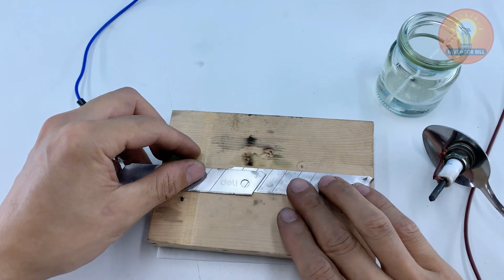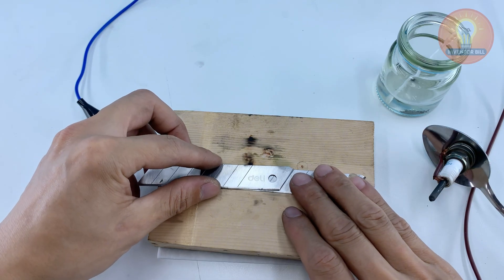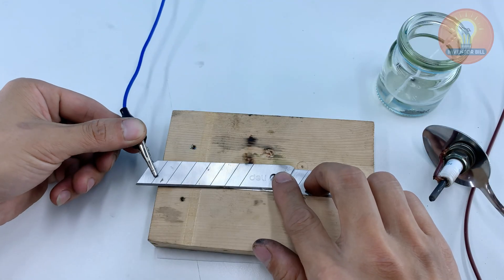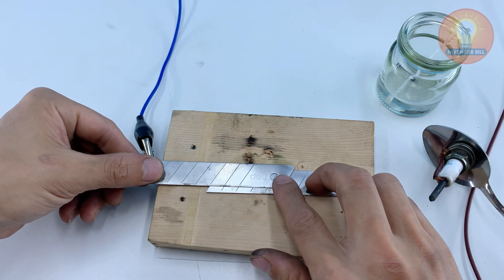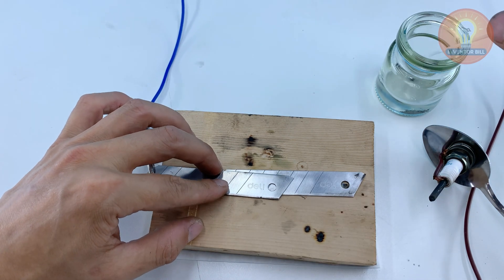Now let's take this homemade spoon welder a step further by joining two razor blades. These thin blades usually snap or bend when you try to fix them, but with a focused arc they bond surprisingly well. I line up the blades so their edges meet, then tap a bit of the acid solution right on the joint.